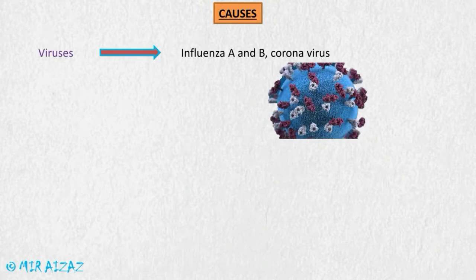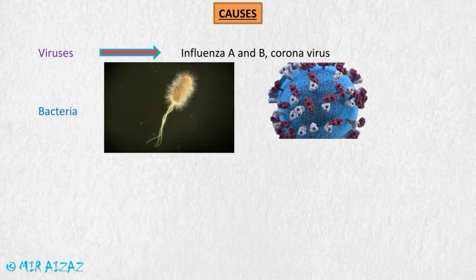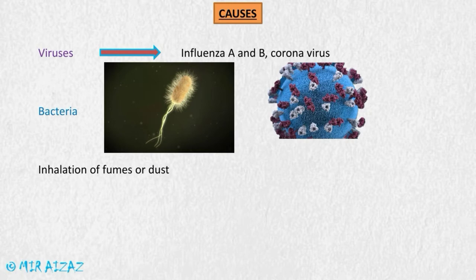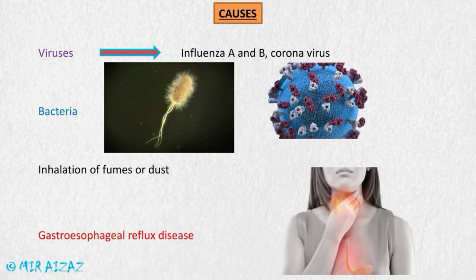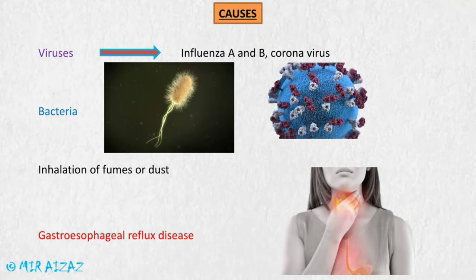The causes of bronchitis include viruses such as influenza A, influenza B, coronavirus, and others. Bacteria may also cause bronchitis. It may also be caused by inhalation of fumes or dust, which can irritate the lining of the bronchial tubes and cause inflammation and excess mucus production. It may also be caused due to gastroesophageal reflux disease, in which gastric contents move up into the esophagus and may reach up to the pharynx, causing irritation and inflammation of the pharynx.